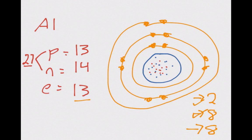So let's just add those in. 1, 2, 3. Now I have 13 electrons. So now I have a completed diagram for a Bohr model of aluminum.